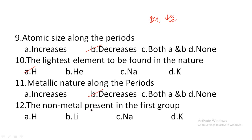Next: the non-metal present in the first group — option A: hydrogen, option B: lithium, option C: sodium, option D: potassium. In the first group, most elements are S-block or D-block metals. However, hydrogen, even though it belongs to the first group, is a non-metal. So the non-metal present in the first group is hydrogen. Hence option A is the correct answer.